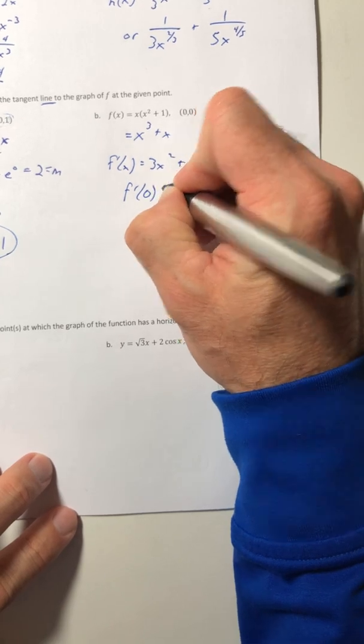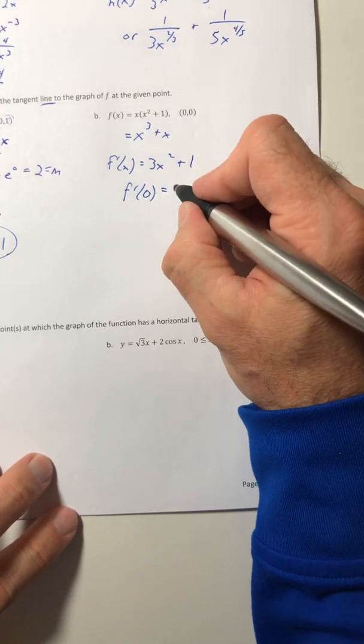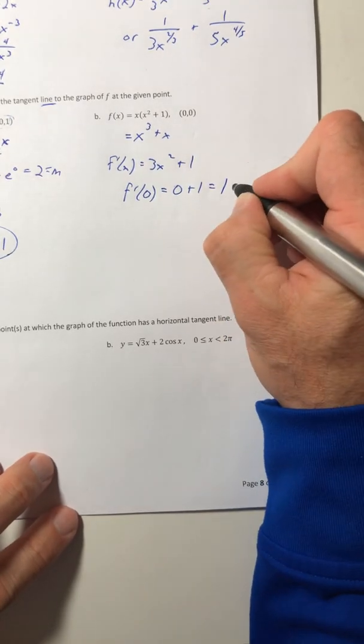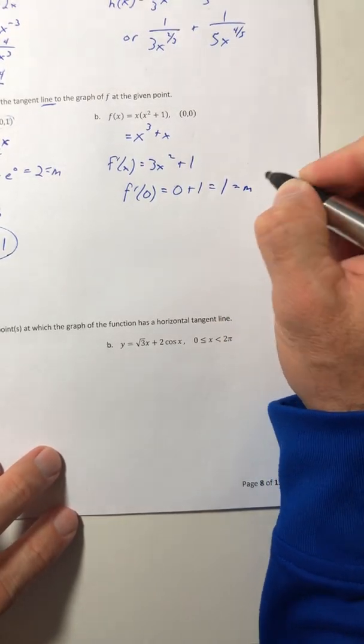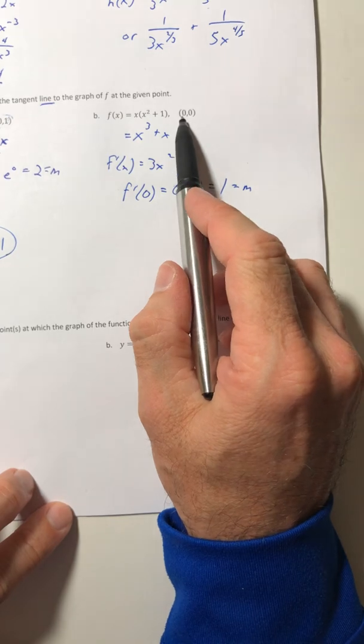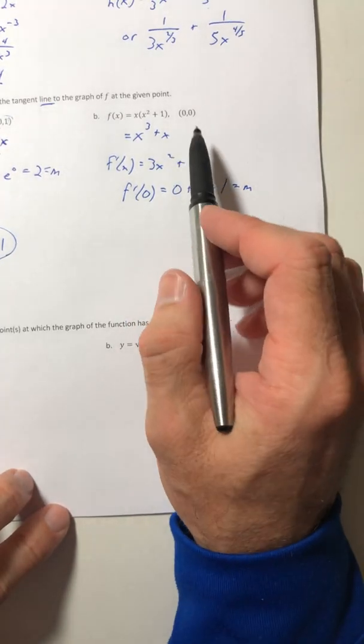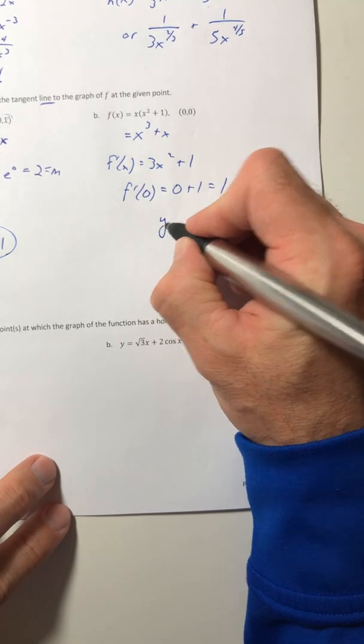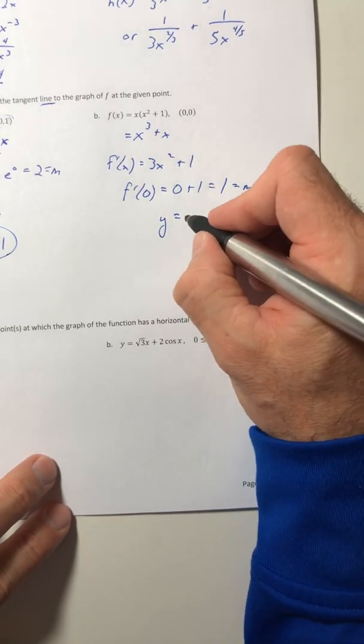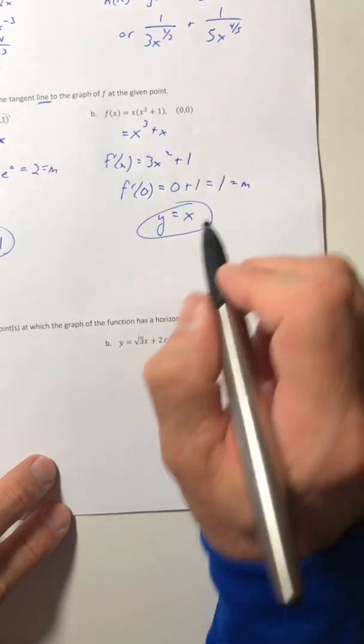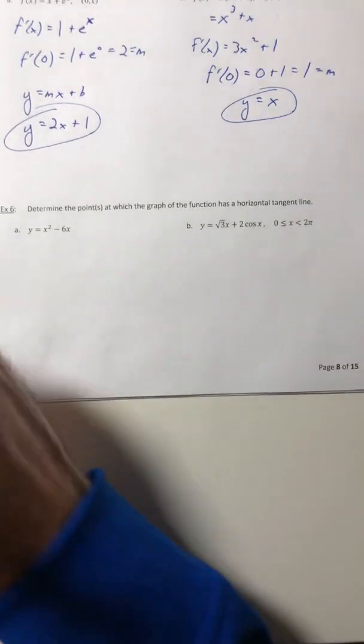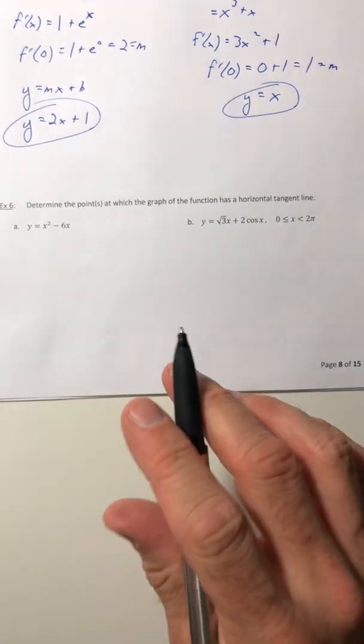So 3x squared plus 1, so that's your derivative. Plug in the x value of the point. We end up with one and that is your slope. So you could use point slope formula again or go hey, this is just the y-intercept again, you could use y equals mx plus b. So just y equals x. So a lot faster than using that limit definition.